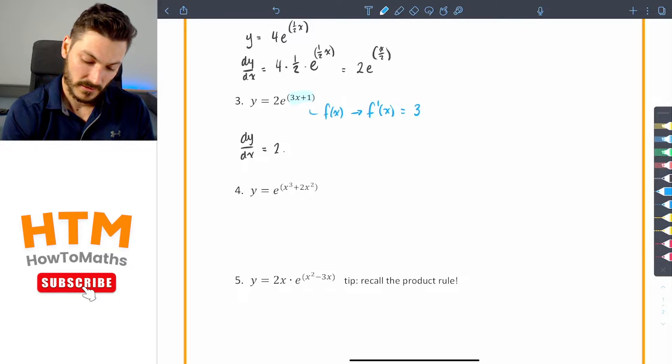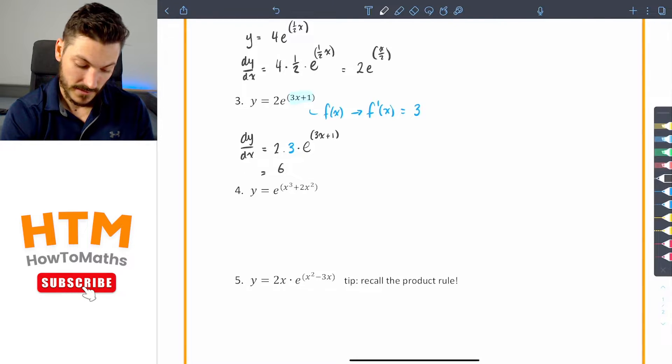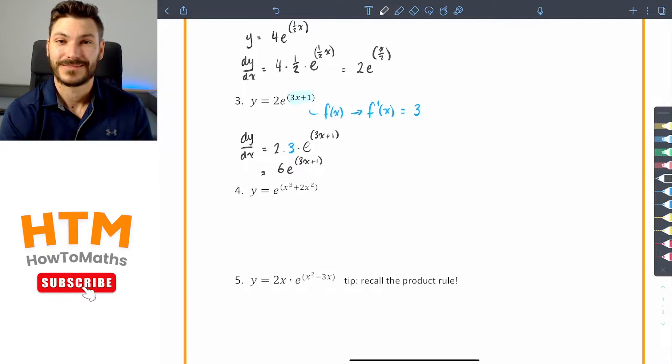So I have dy dx equals two times three. In fact, I'll even color code that for you guys. Two times three times e to the power of three x plus one. Tidy that up by multiplying the two and the three together to get six e to the three x plus one.